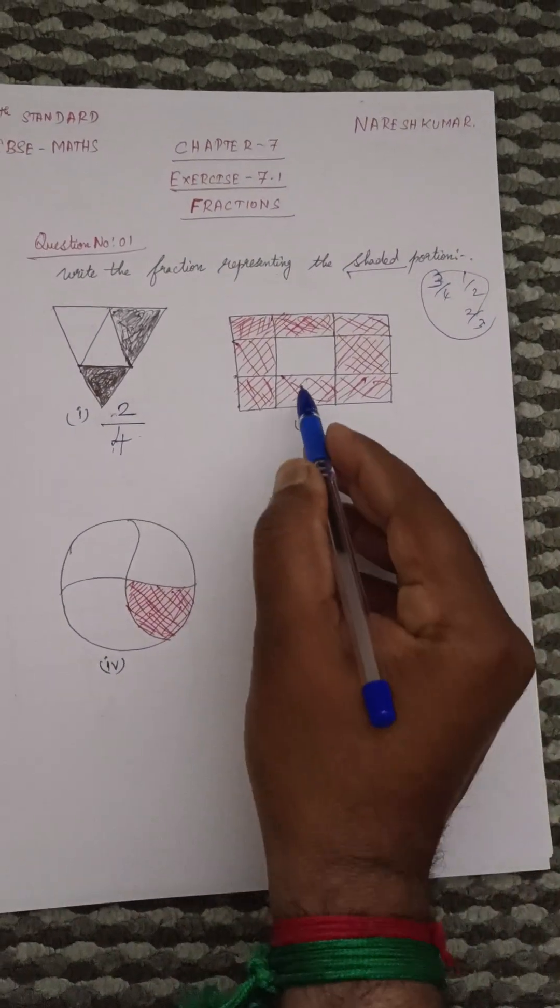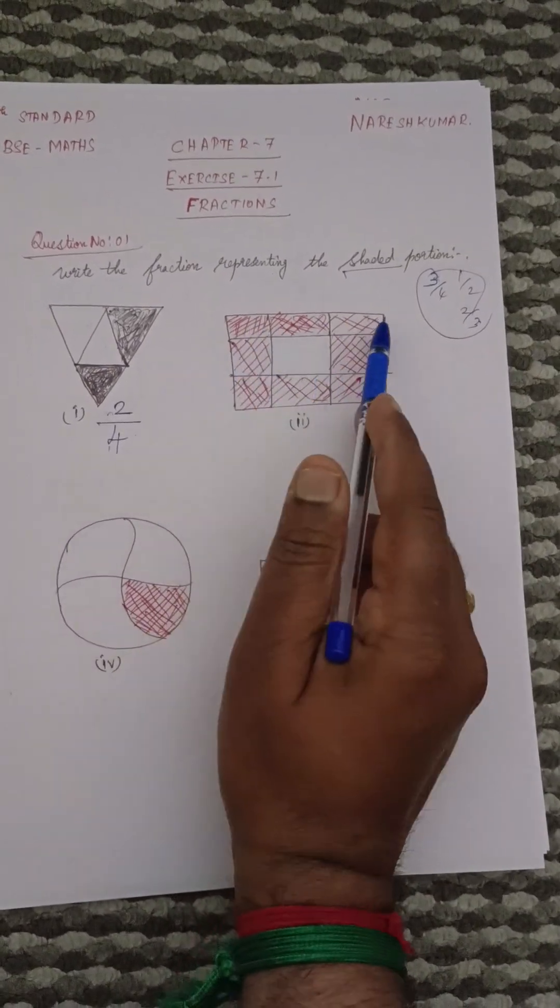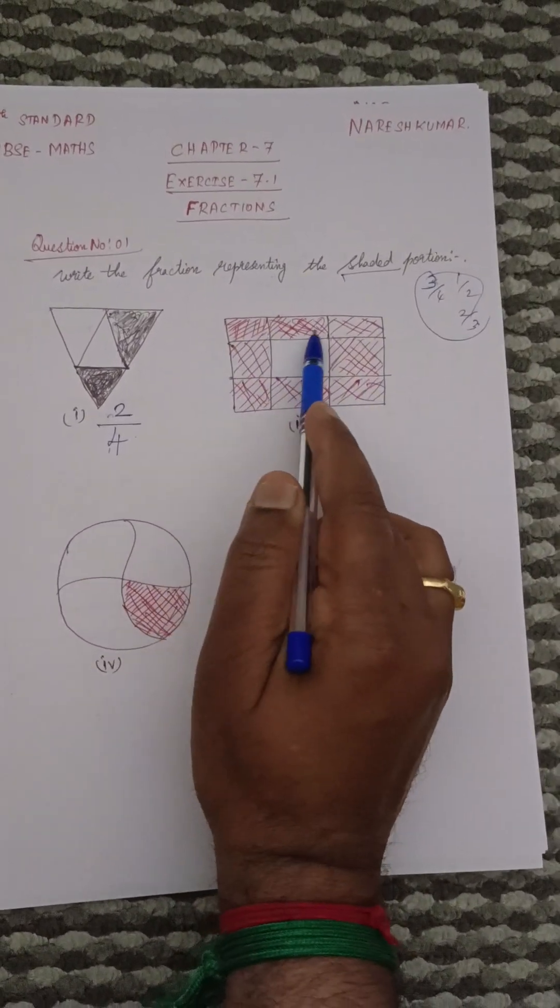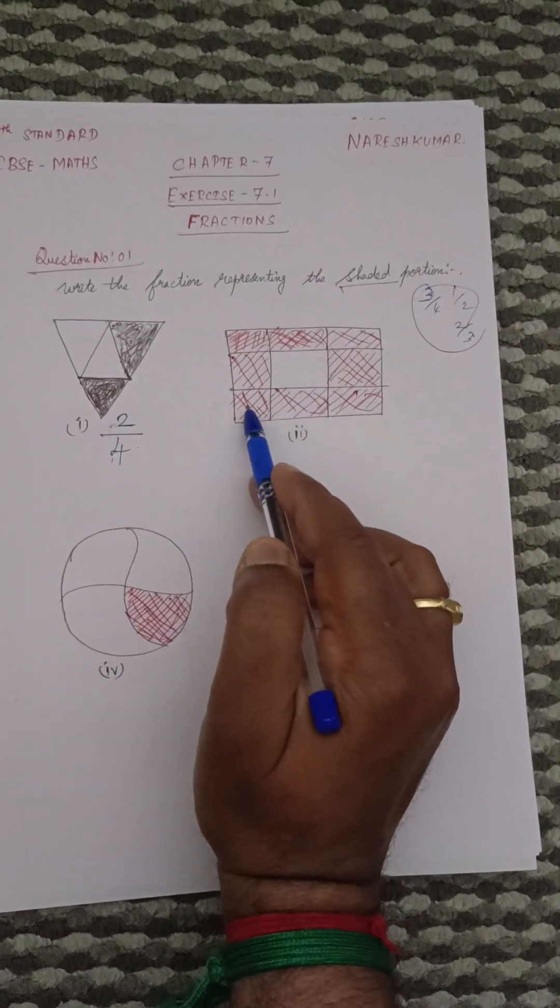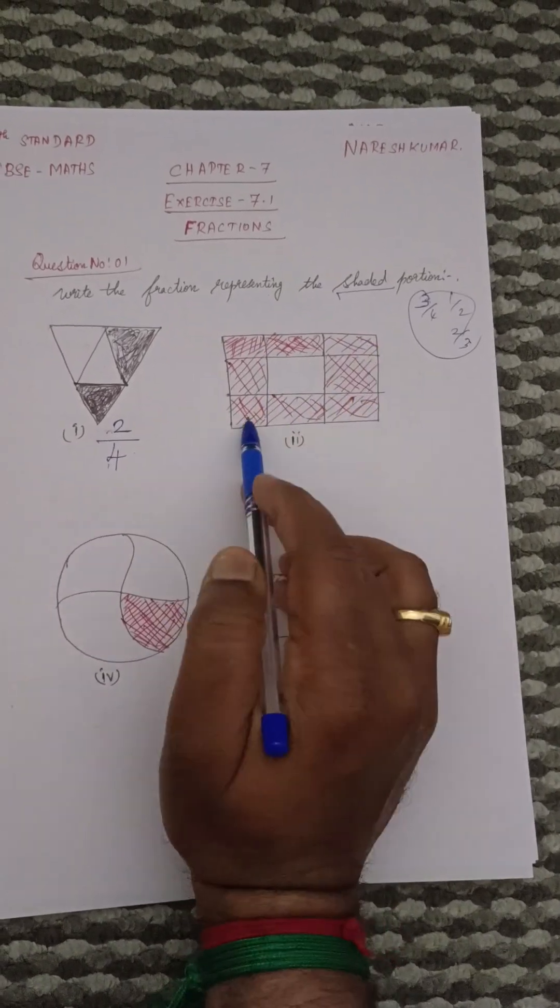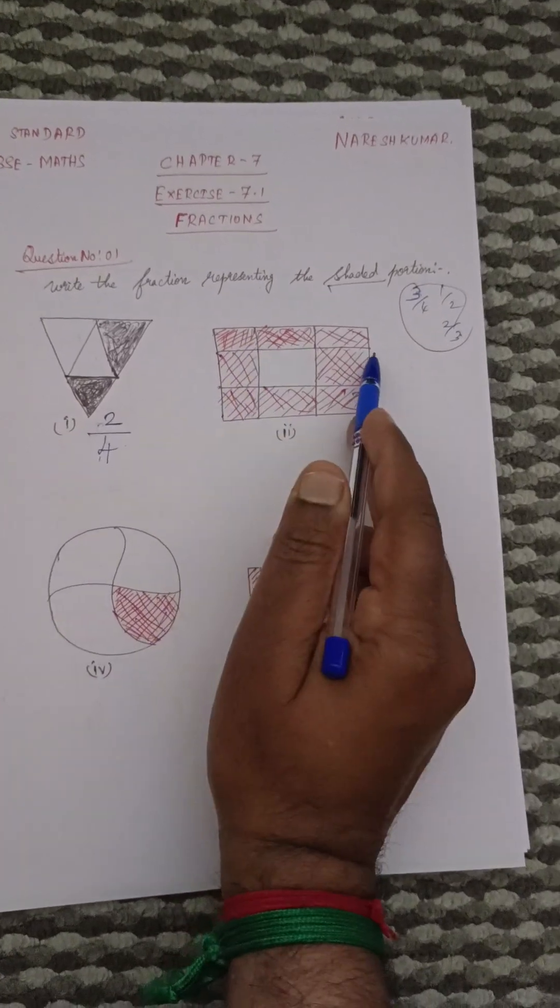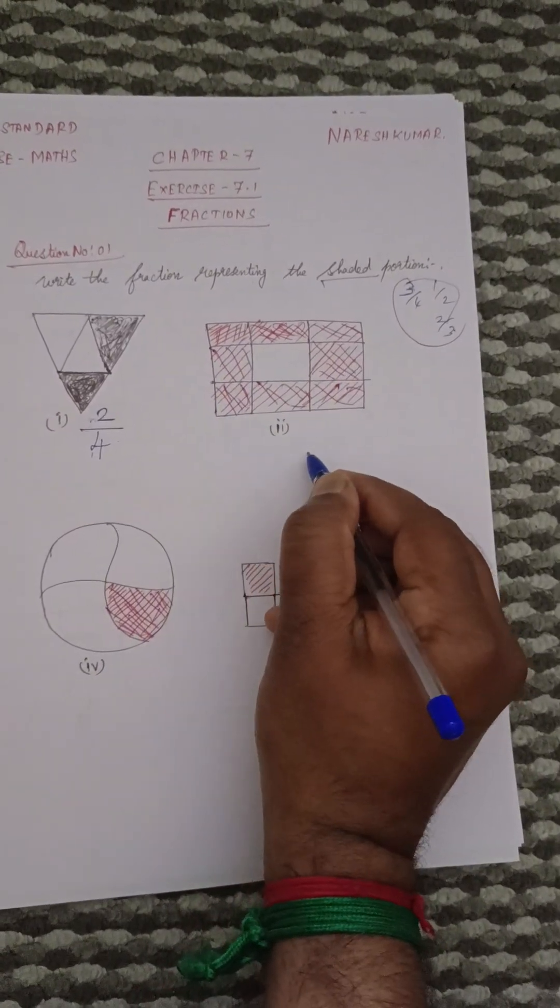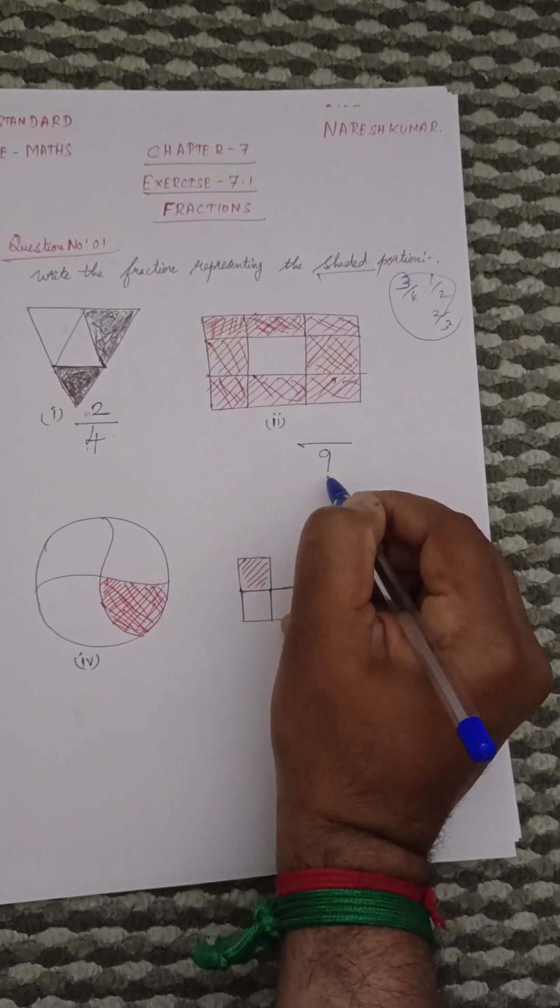Then next one, this one. How many spaces are there? 1, 2, 3, 4, 5, 6, 7, 8, 9. So 9 places are there. In this diagram, they have been divided into 9. So 9 should be written as denominator. That is, total number of things should be written as denominator.